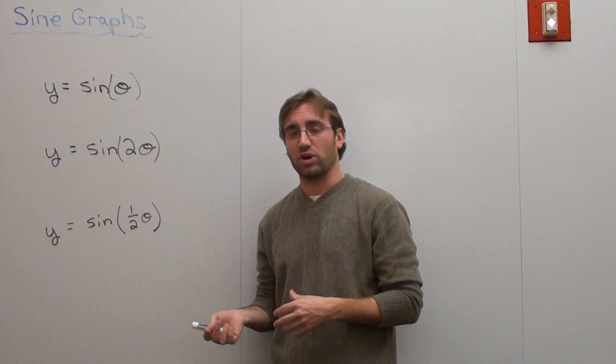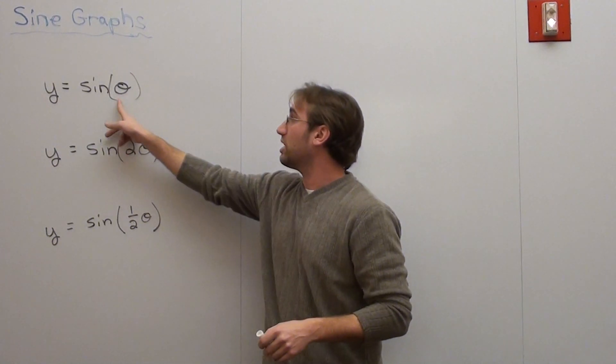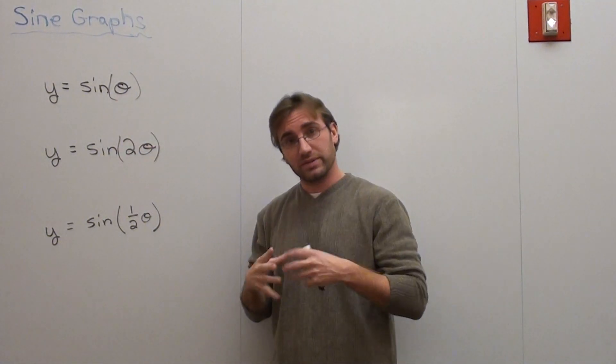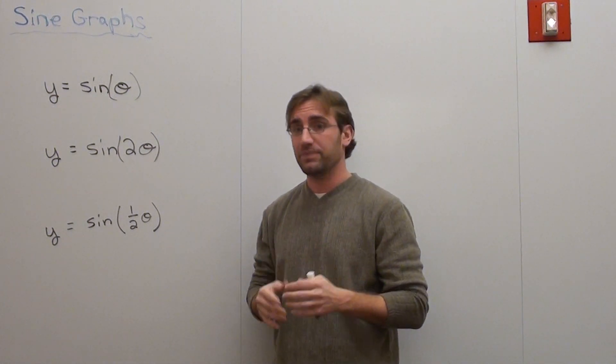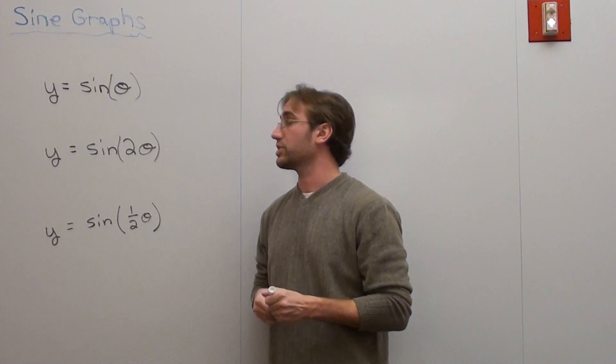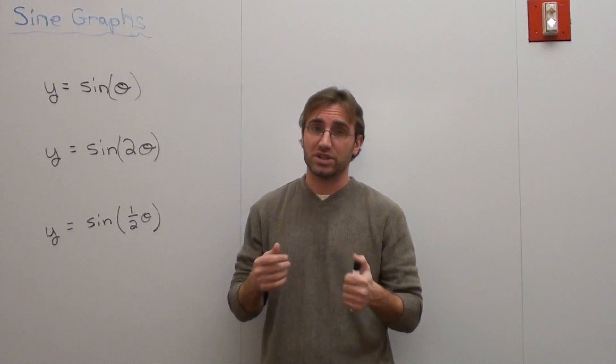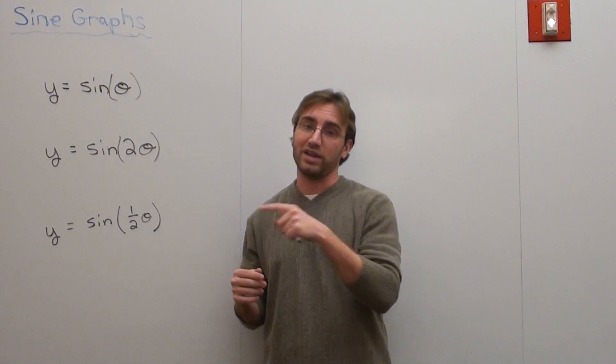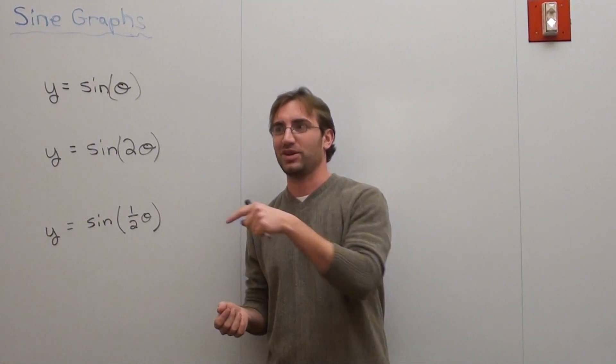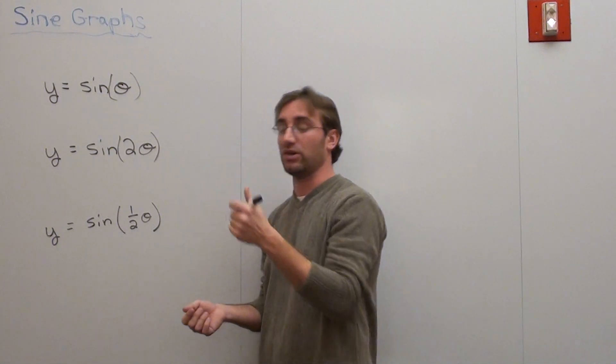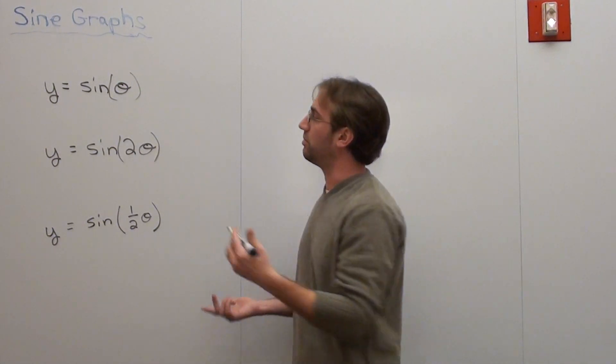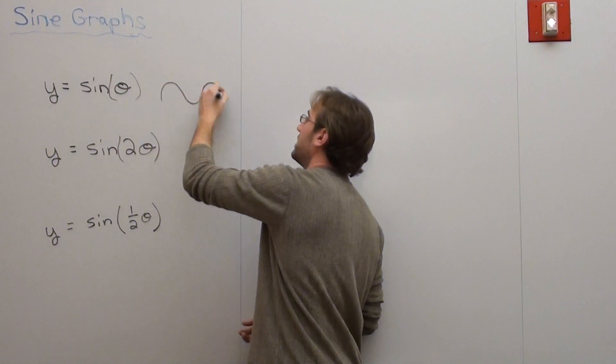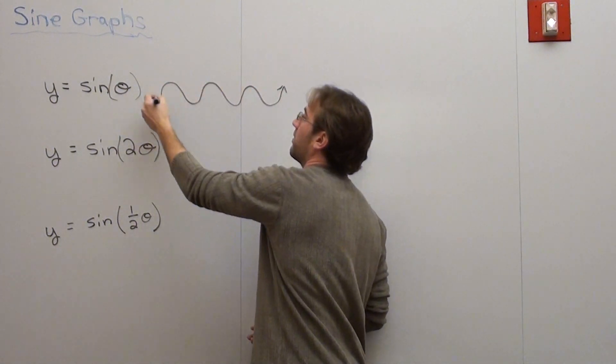This is what we're going to be exploring, but this is just an introduction for now. Putting a number inside with the theta, inside the parentheses, actually affects the way the graph looks. A sine graph is pretty interesting—it's a periodic graph that shifts up and down continually. I'll get more specific as I get into it, but for now, this is basically what a sine graph looks like.